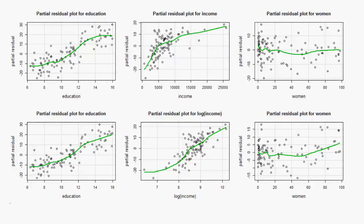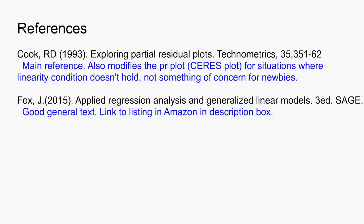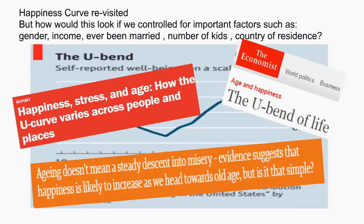In summary, we examined the PR plots in multiple linear regression for signs of a type of nonlinearity, and may use this along with the Box-Tidwell procedure. I'll show you how to get this plot in stats packages in separate videos and add the links in the description box.